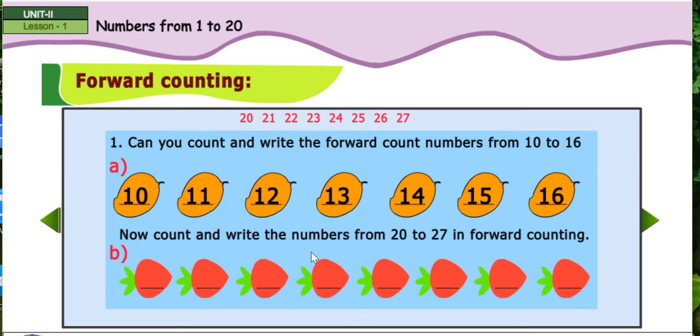Now, count and write the numbers from twenty to twenty-seven in forward counting. Twenty-one, two, twenty-four, twenty-five, twenty-six, twenty-seven.